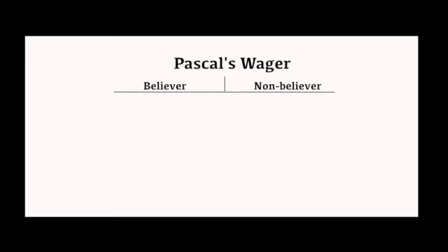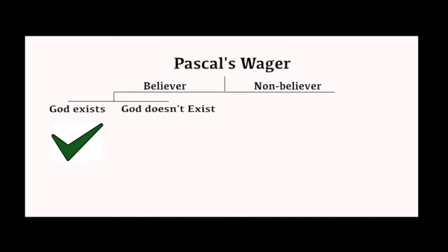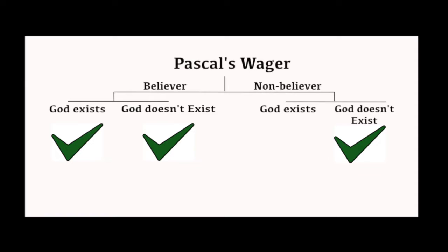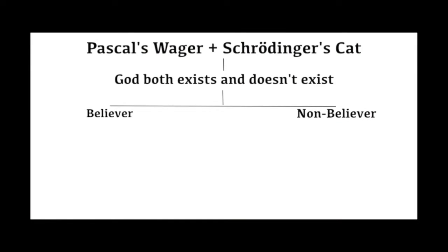A way this can be connected to a historical example is Pascal's wager. Pascal's wager suggests that if you believe in God, then you'll be fine, because if there is a God, then there is heaven, which is good. If there isn't a God, it doesn't matter. But if you don't believe in God, there is a 50% chance of eternal damnation, because if there is a God, then you run the risk. Although Pascal's wager predates Schrödinger's cat by about 300 years, you can use it as an illustration and use Schrödinger's cat in that context.